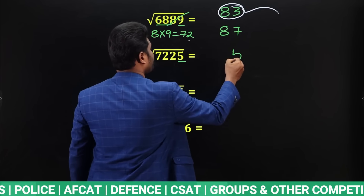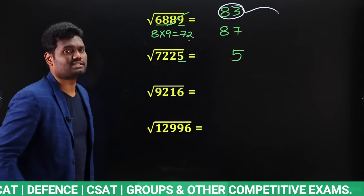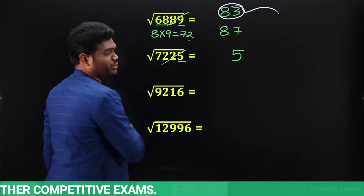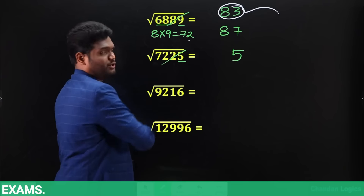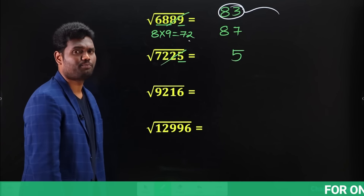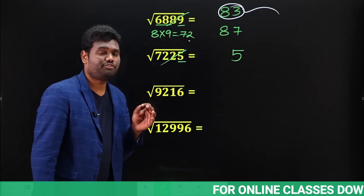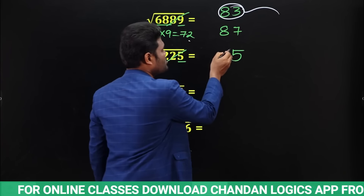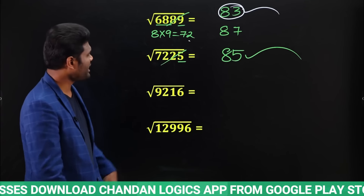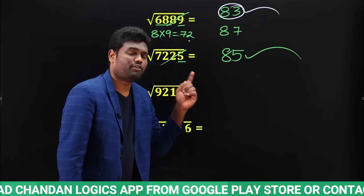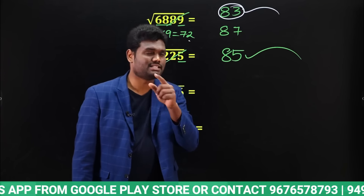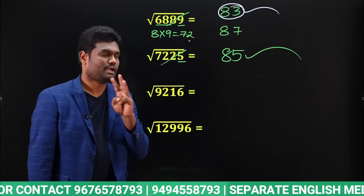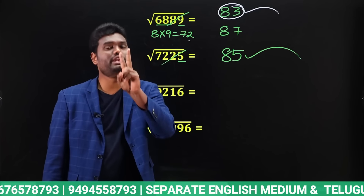For √7225: last digit is 5, and 5 has only one possibility — 5. So for last digit 5, you need only 2 steps, not 3. Strike off last two digits — remaining is 72. Perfect square close to 72 and less than 72: 8² = 64 (since 9² = 81 is more). So directly the answer is 85. For last digit 5, there's only 1 chance, so only 2 steps are needed.